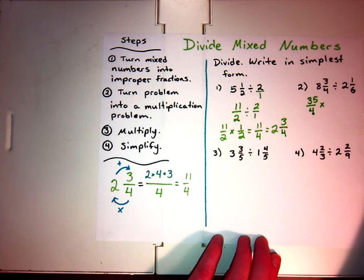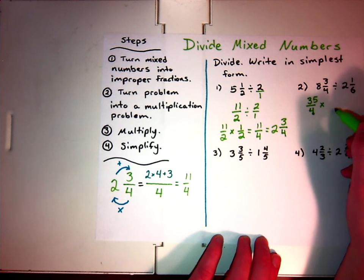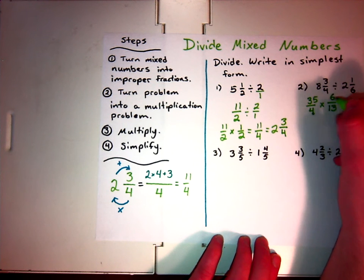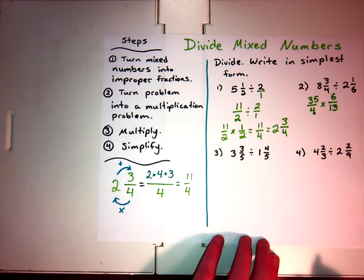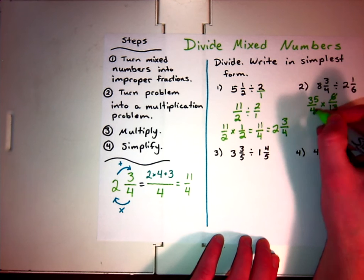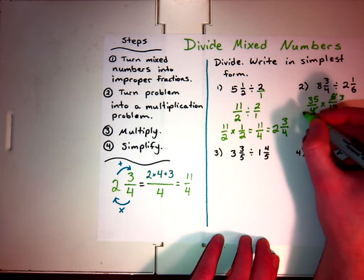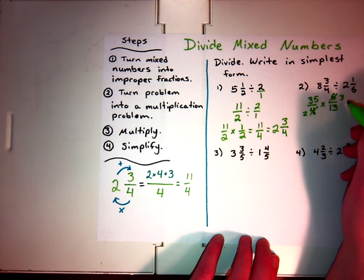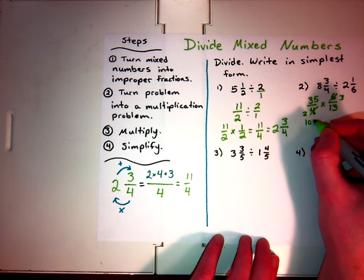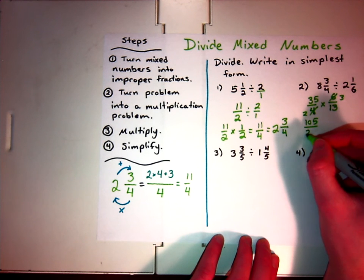2 times 6 is 12 plus 1, 13. And normally, that would go in my numerator, but since I know I need to find my reciprocal, that's actually going to go in my denominator. And then, I know that my denominator is actually, since I'm finding the reciprocal, going to go into my numerator. There, I can look across and say, well, 6 and 4 have a common factor of 2. 2 goes into 6, 3 times. 2 goes into 4, twice. I'm going to get 35 times 3, which is 105. 2 times 13, which is 26.